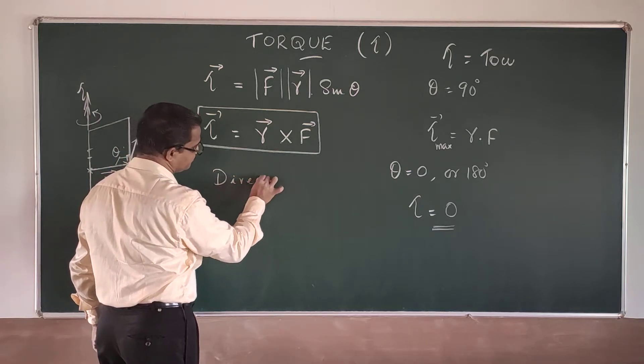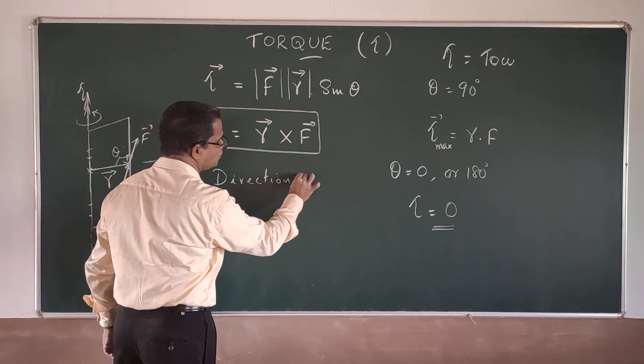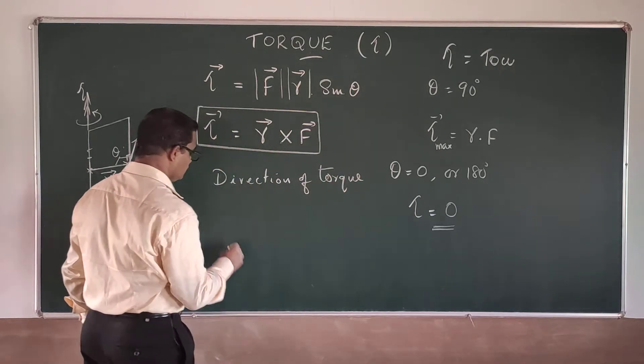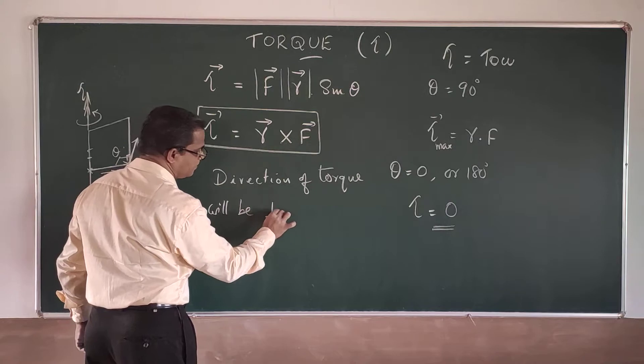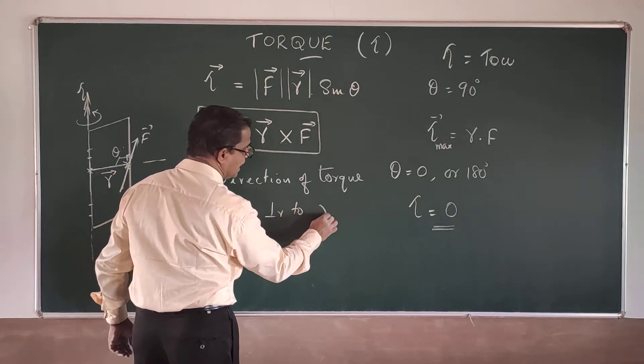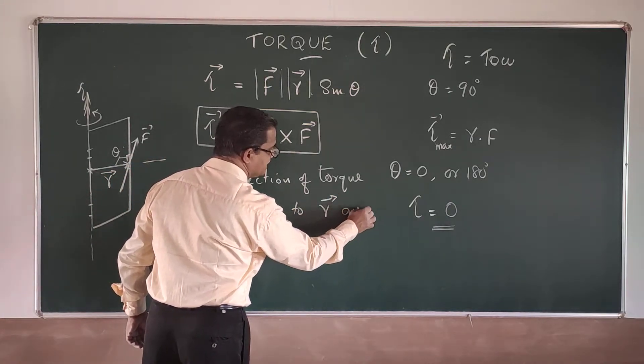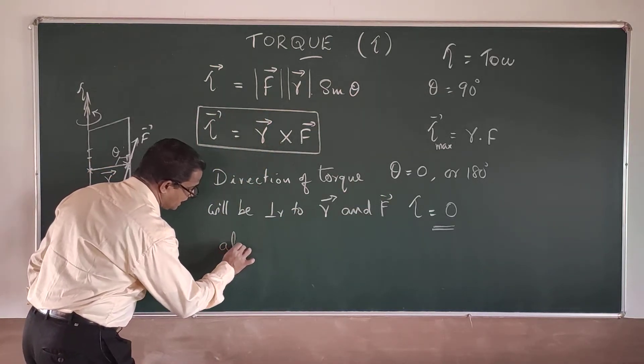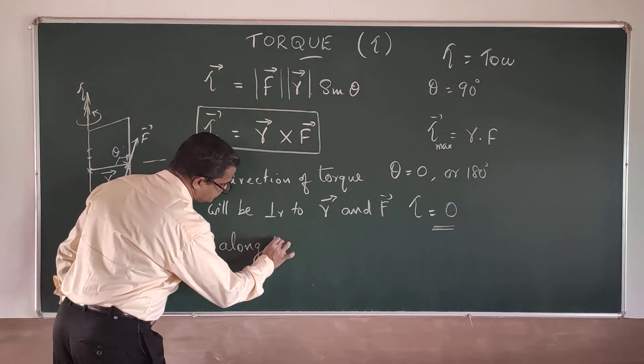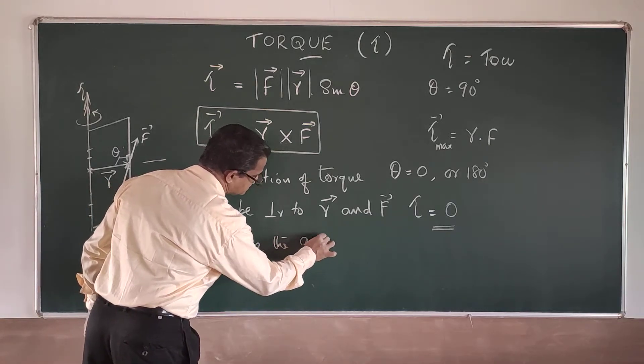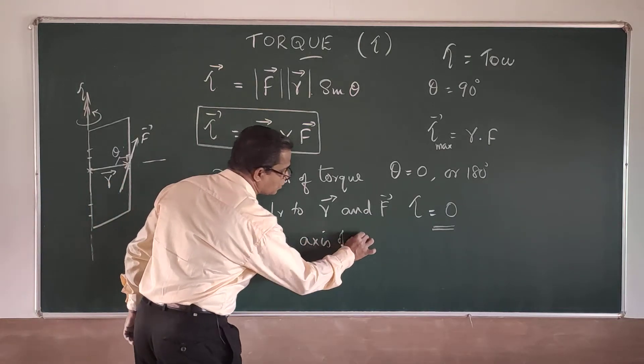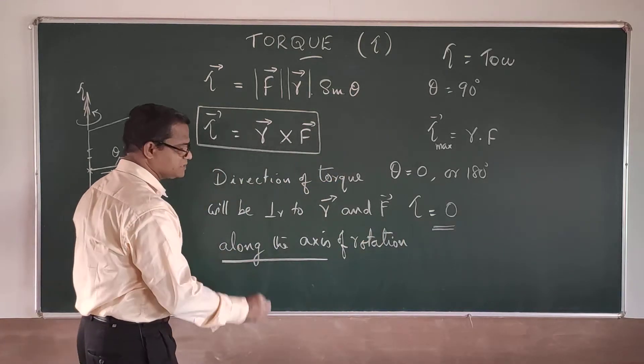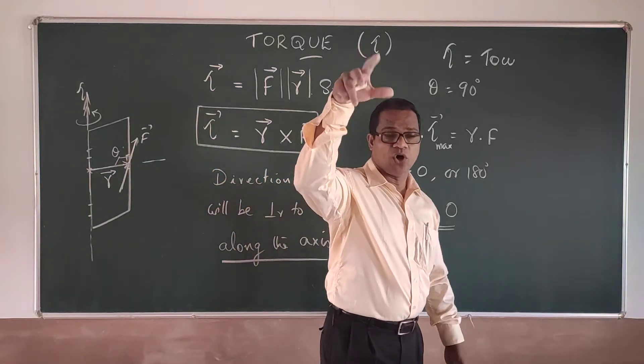Direction of torque will be perpendicular to R and F. But it comes along the axis of rotation. So along the axis of rotation, either upward or downward.